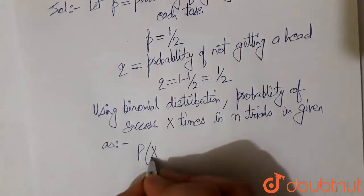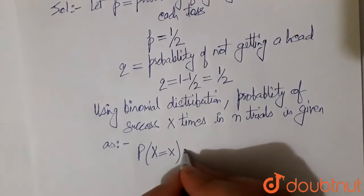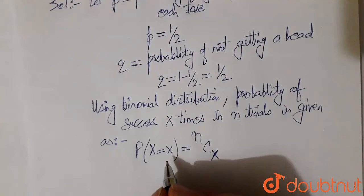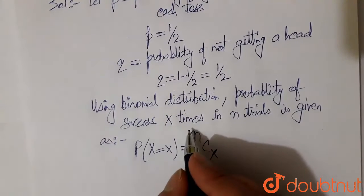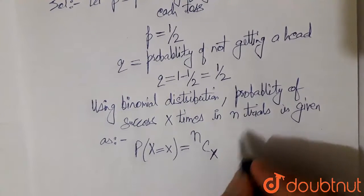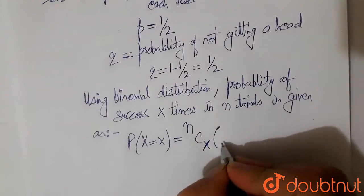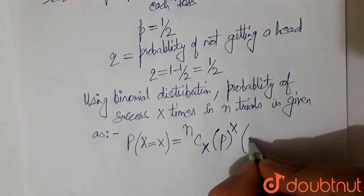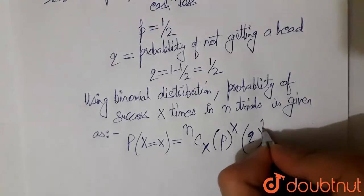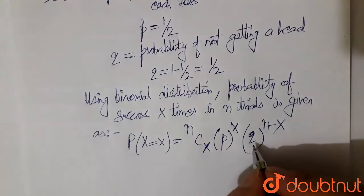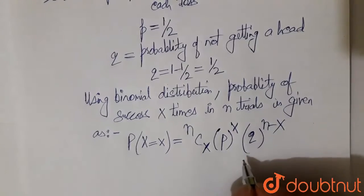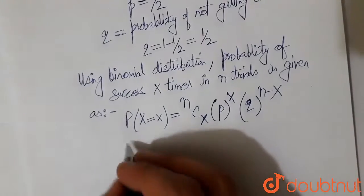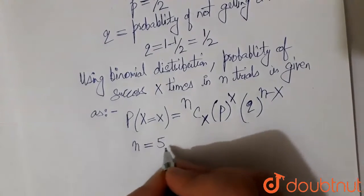P(X=x) equals nCx times p to the power x times q to the power n minus x, where p is probability of success and q is probability of failure. So here n is 5, we are tossing the coin 5 times, and we have to get probability of getting at least 3 heads.